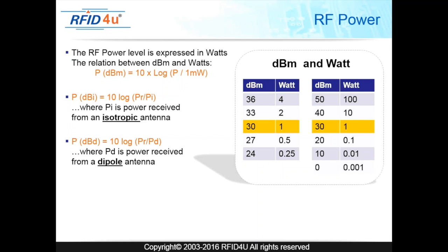In the formula, power in dBi equals 10 log of power out divided by power in. The 'i' here stands for isotropic antenna, meaning an isotropic antenna was used to measure this. If you see a 'd' in the nomenclature — dBd — that means a dipole antenna was used for the calculation and testing. So 'i' means isotropic and 'd' means dipole.